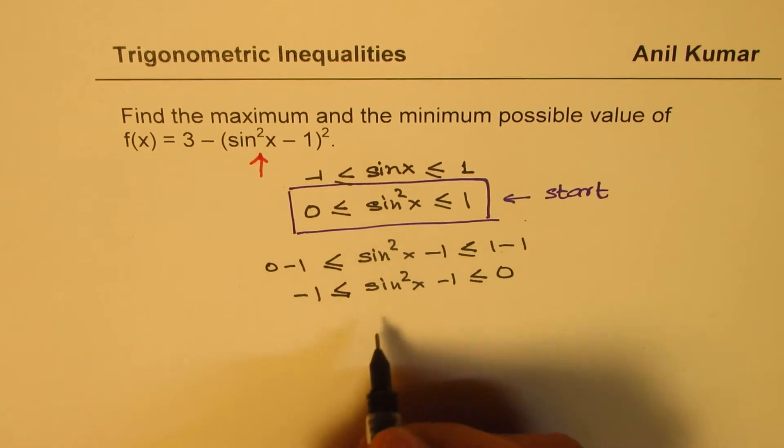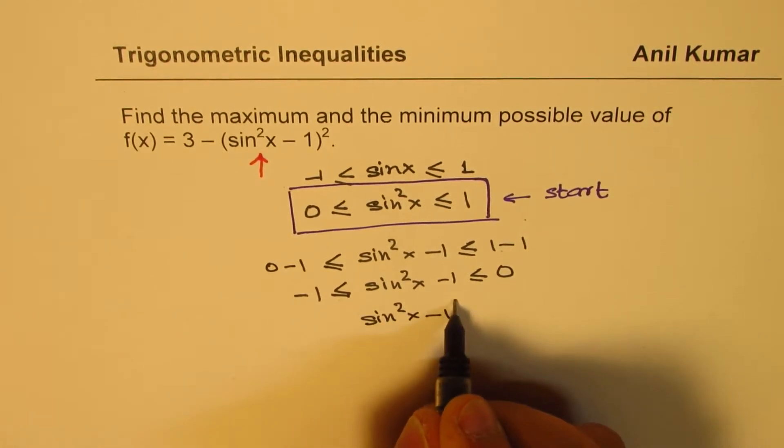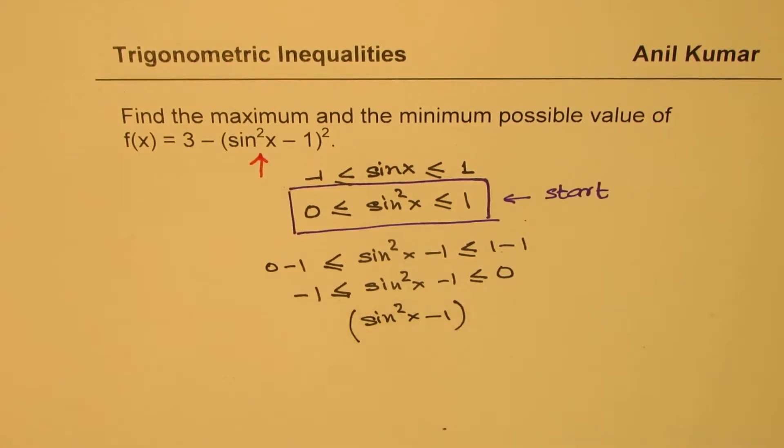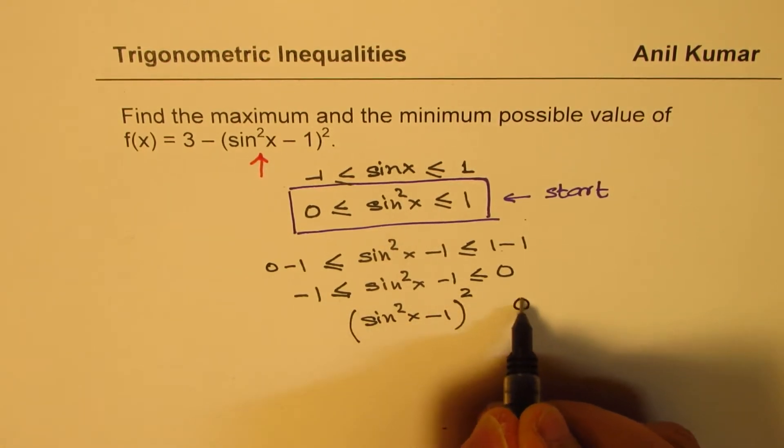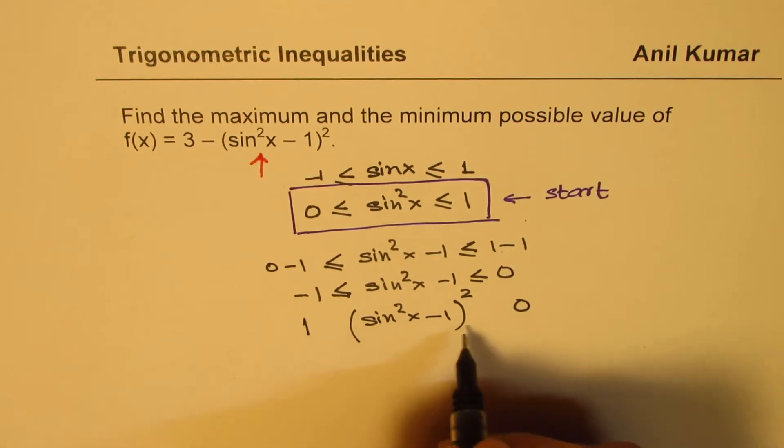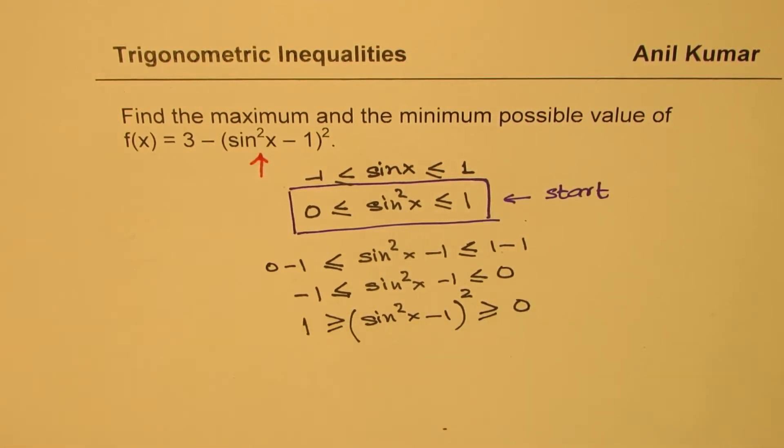Now we need to square it. So if I square it, whenever you square, the inequality signs may change. We are making negative as positive and positive as negative. So when you square, you get 0² as 0 and 1² as 1. Obviously it should be greater than equal to 0 and less than equal to 1. Does make sense to you.